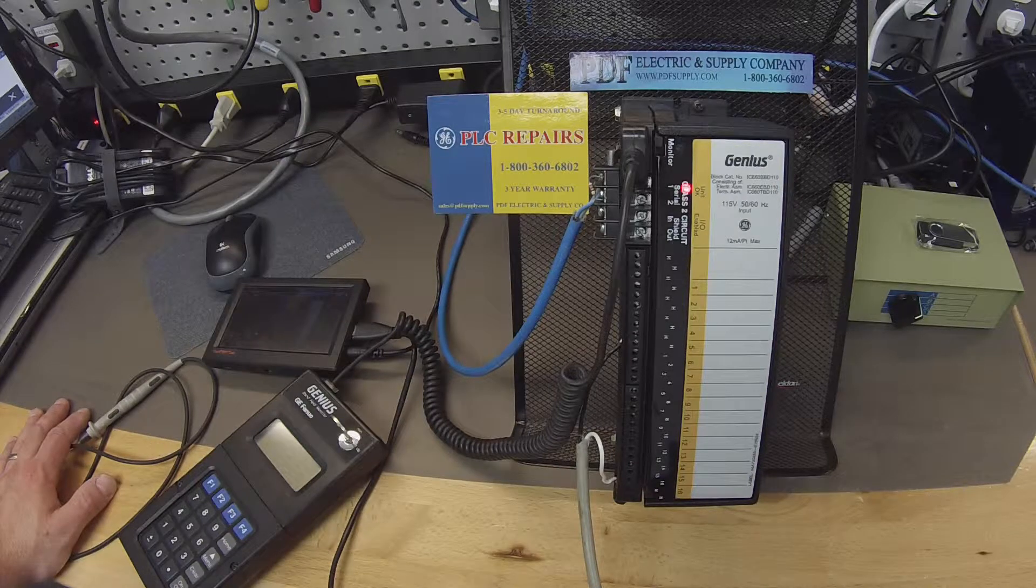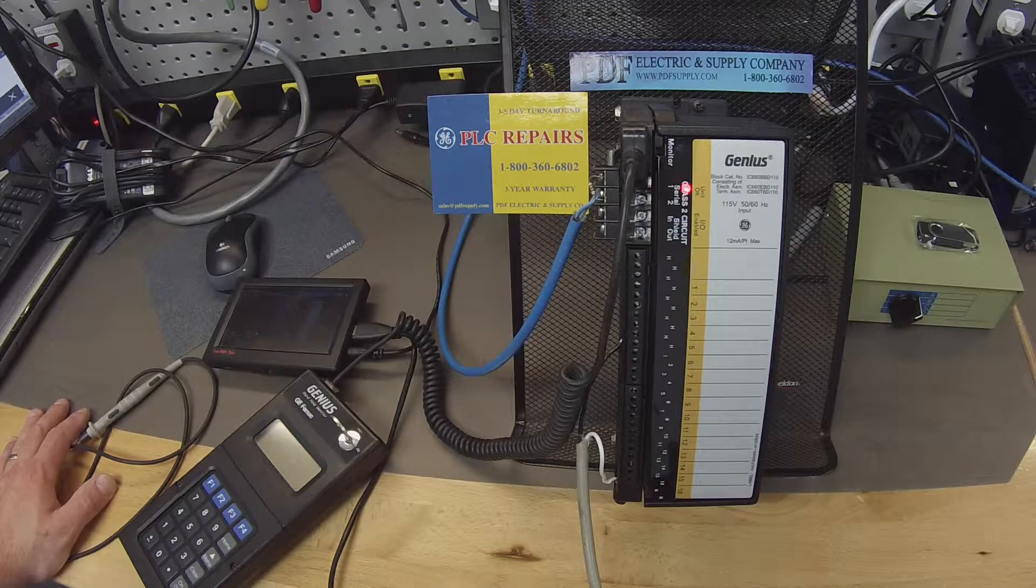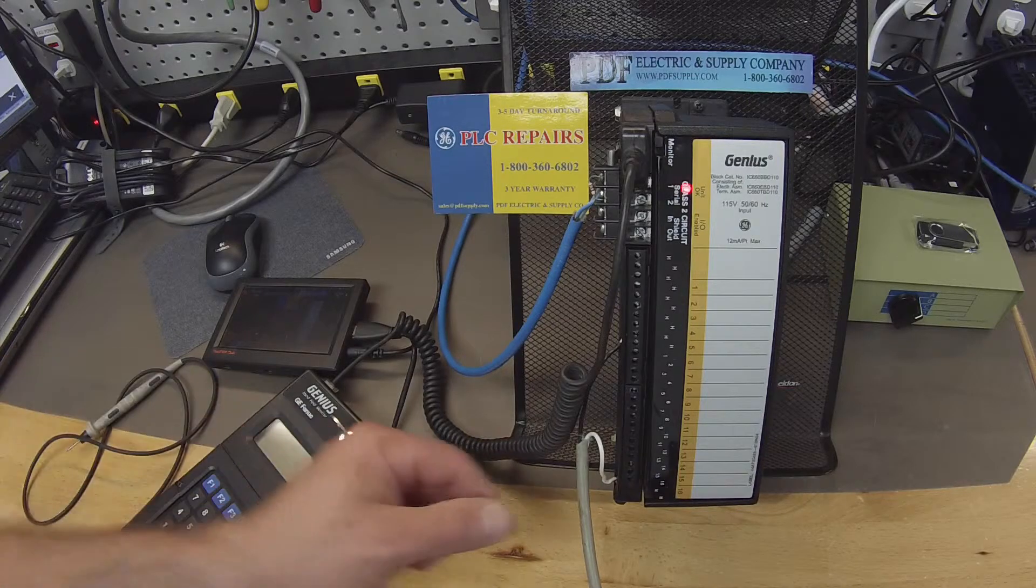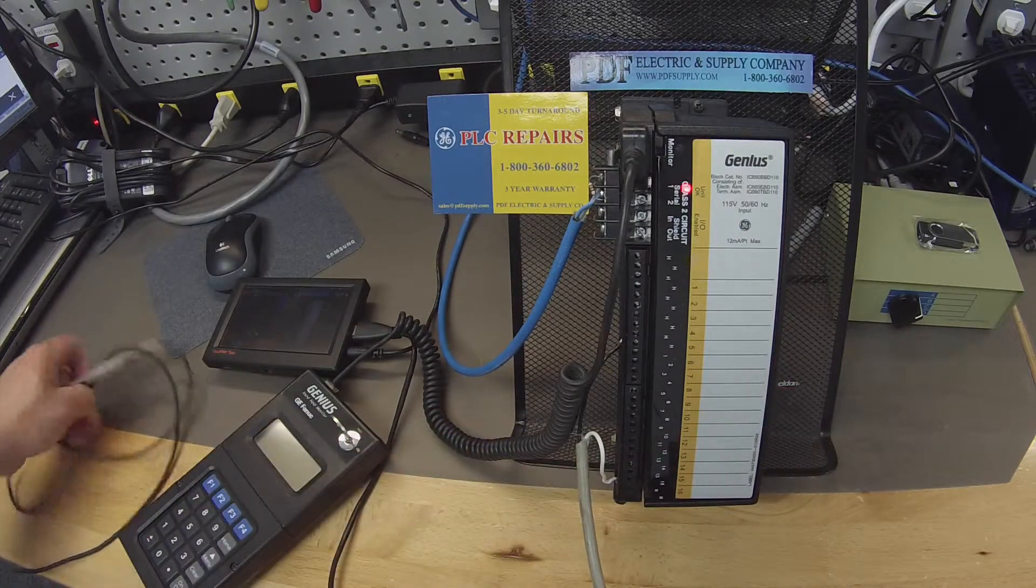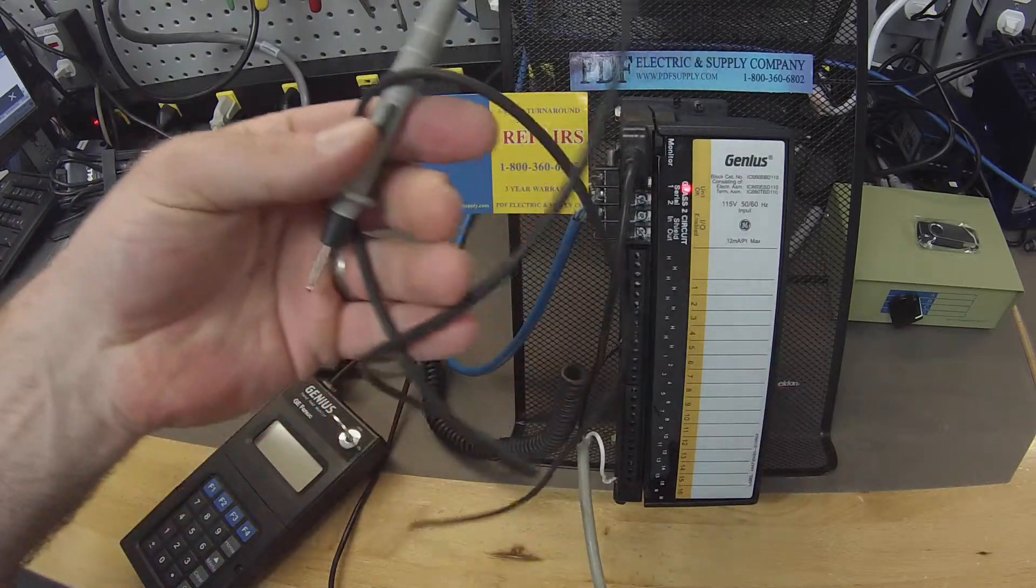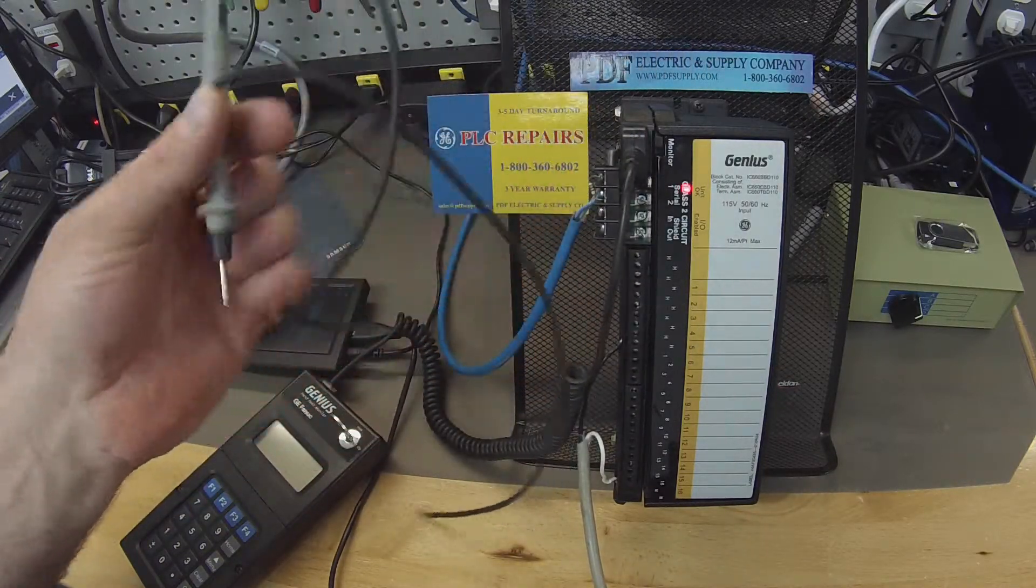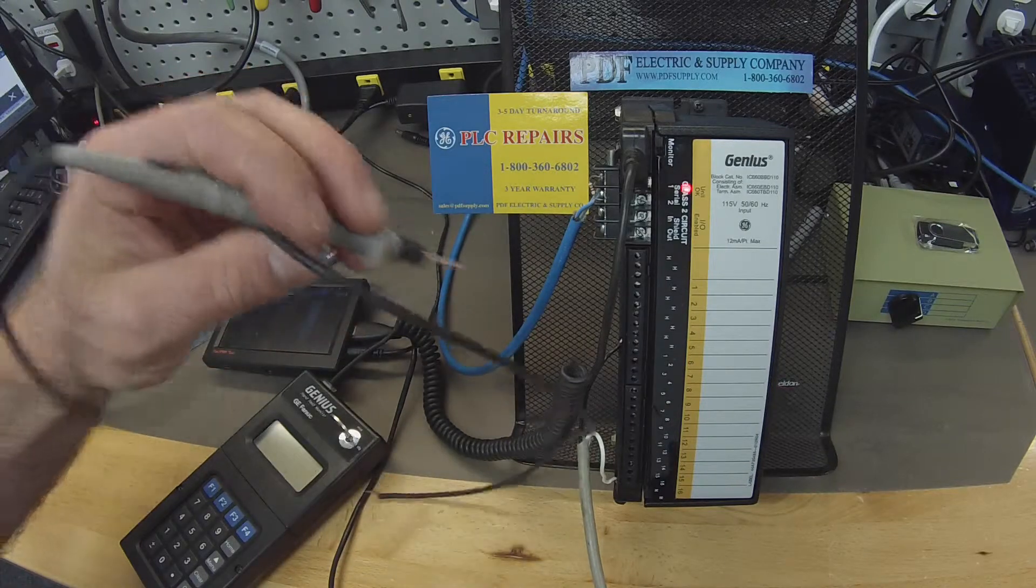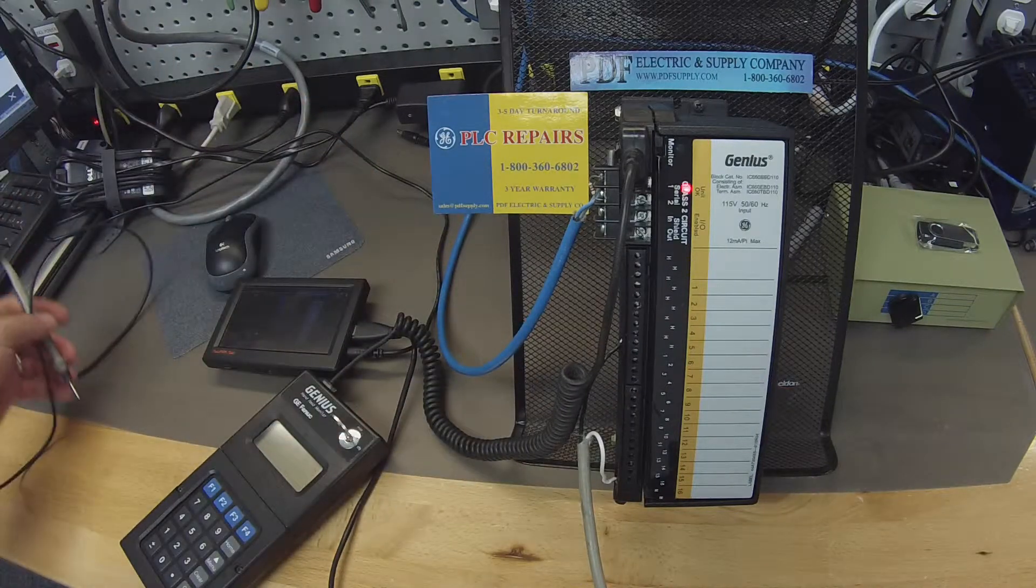A few things that you guys are going to need for this test that I wanted to mention is besides the 115 volt AC cord input, you're also going to need a raw probe. This is what I'm going to use to touch all the terminals to make sure that each point works, each input works.